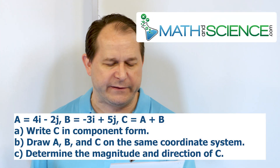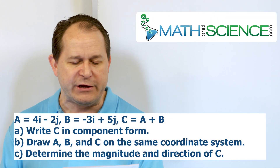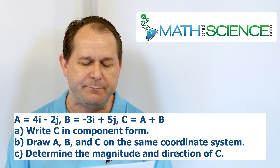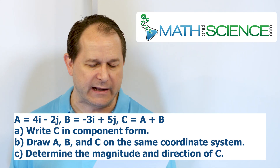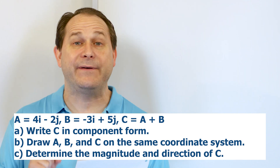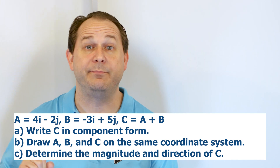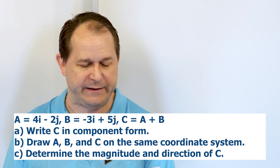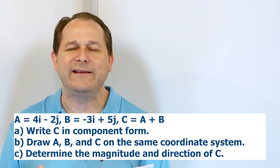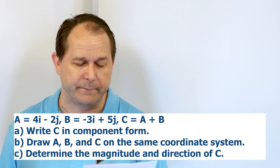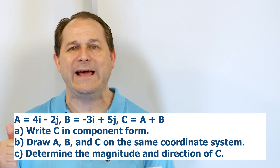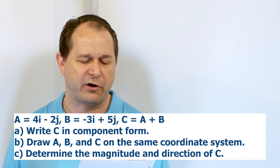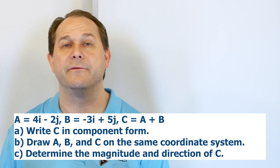We are given the following vectors in unit vector notation. Vector A is 4i minus 2j. Vector B is negative 3i plus 5j. And vector C is equal to vector A plus vector B, so C is the summation of A and B. Part A: write C vector in component form. Part B: draw vectors A, B, and C on the same coordinate system. Part C: determine the magnitude and direction of vector C.